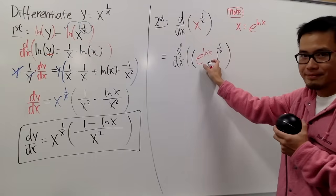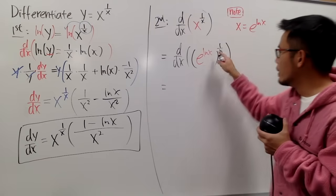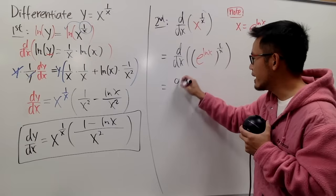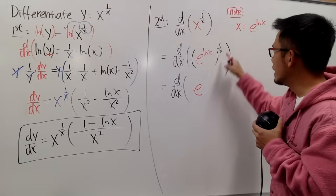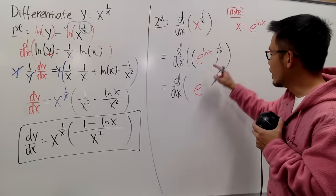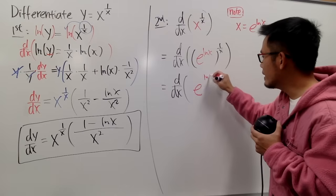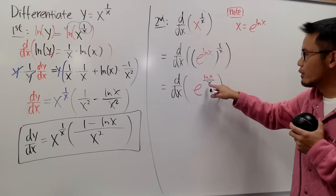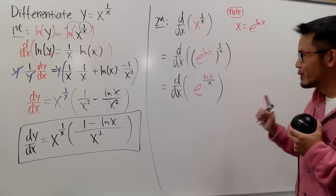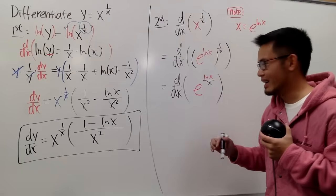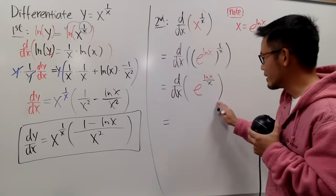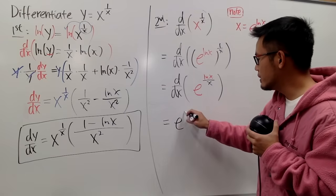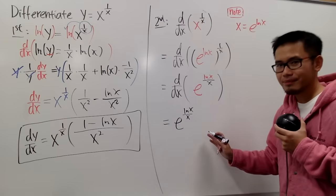This is the second way to present your work. Now we differentiate e to the ln x over x. When we have e to the something, the exponential part repeats first, so we have e to the ln x over x — which is still the original expression — and then by the chain rule we differentiate the exponent ln x over x.